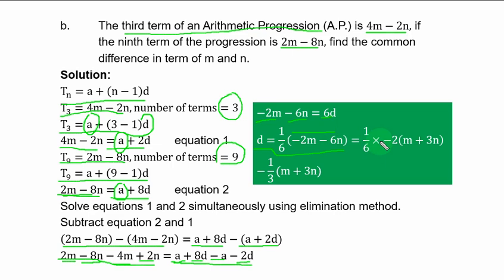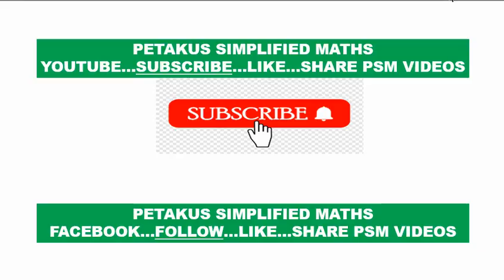The common difference in terms of M and N is D equals minus 1/3 times (M plus 3N). Peter Course Simplified Maths — if you are viewing from YouTube, don't forget to subscribe for updates. Like and share PSM videos. If viewing from Facebook, follow and like the page for more updates.